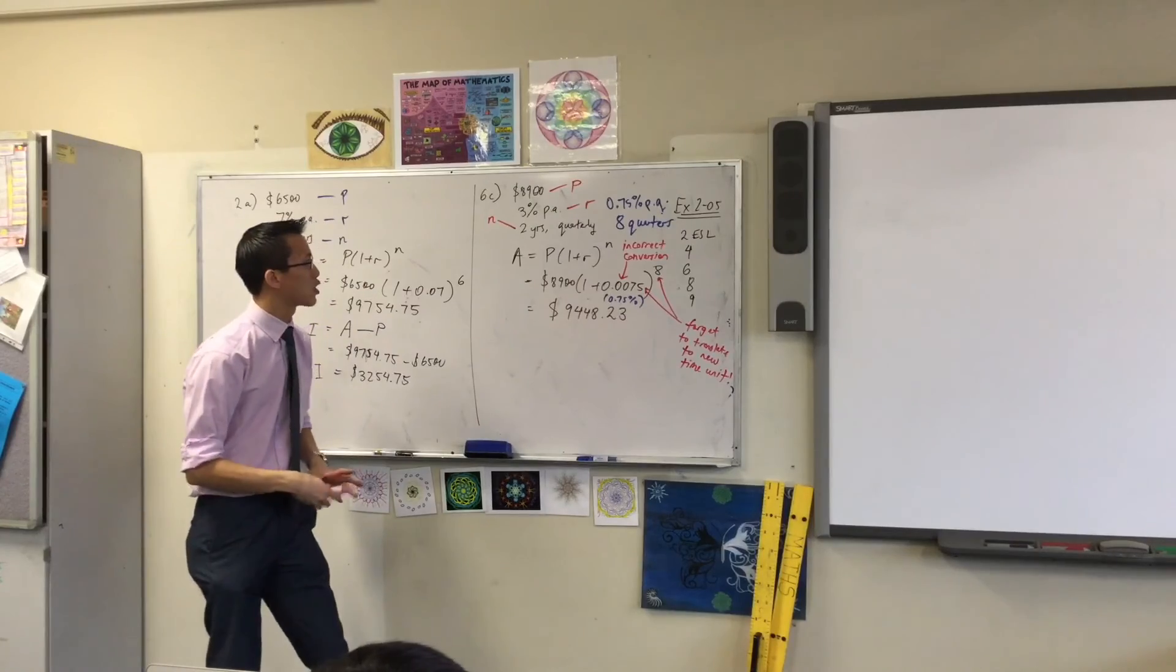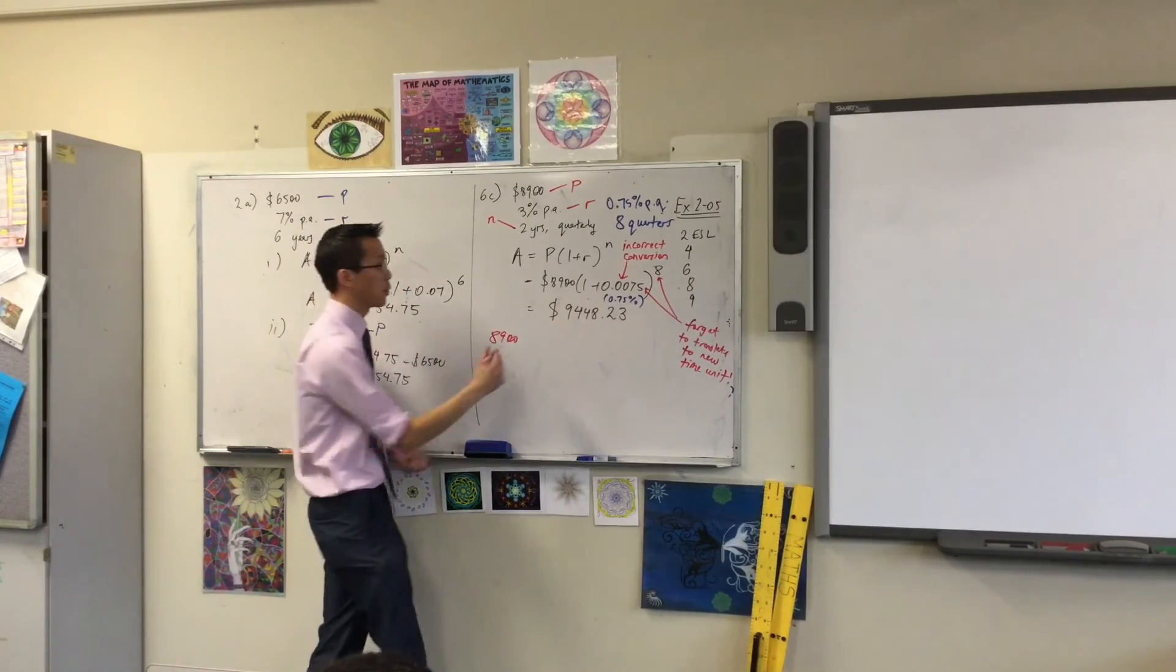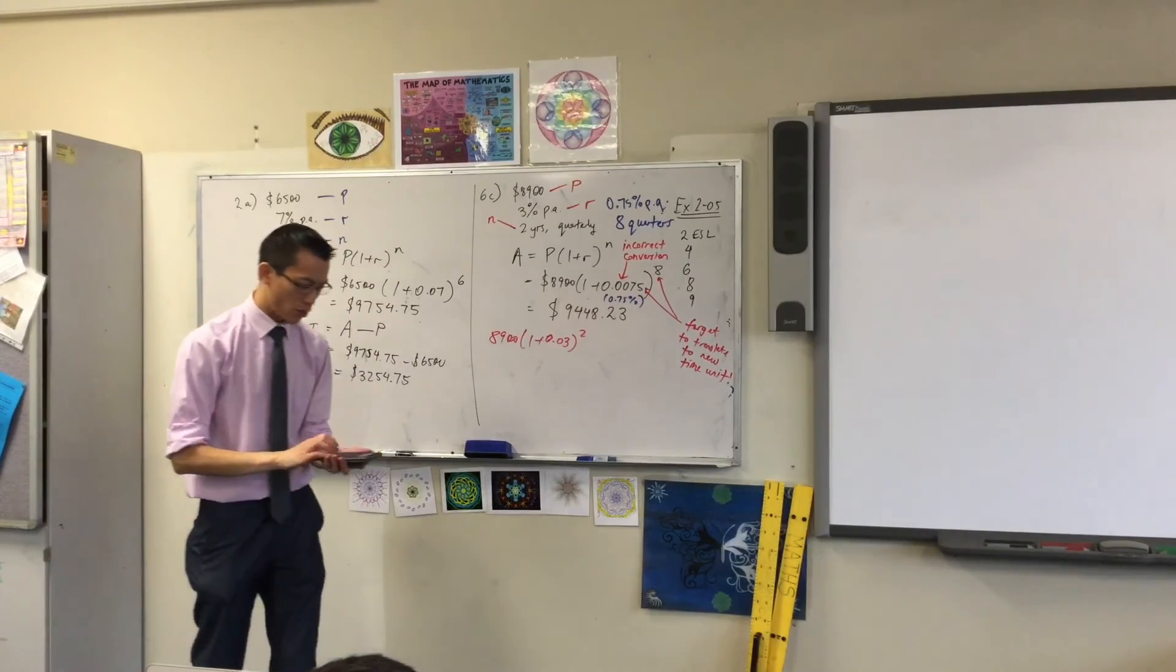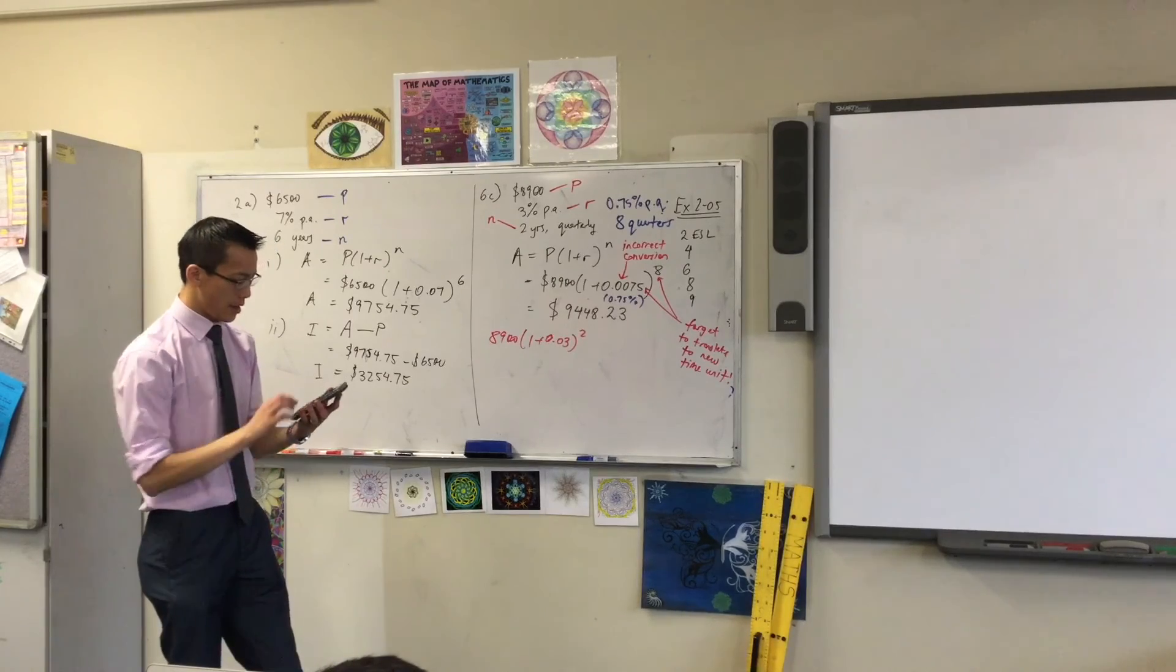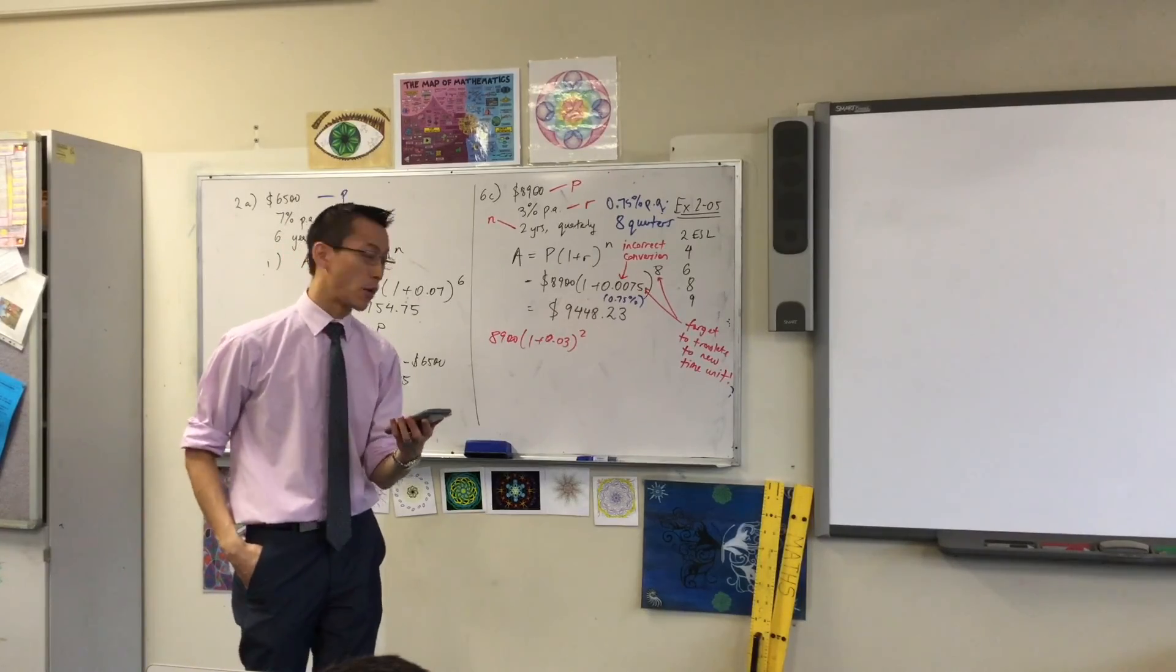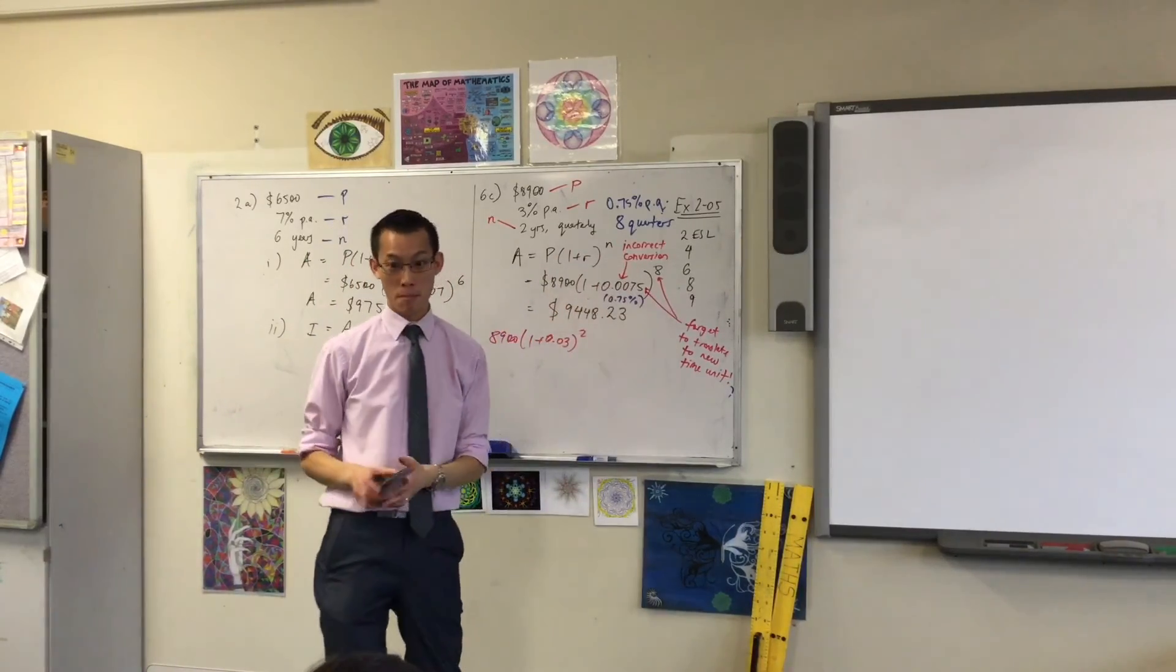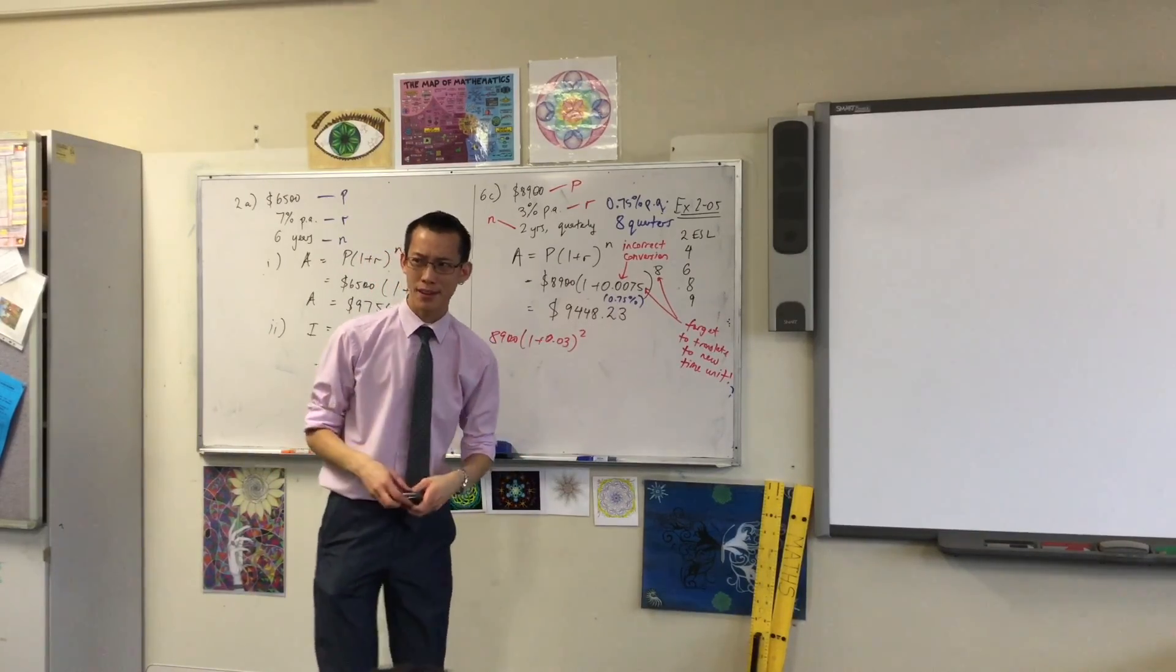They leave it in years. They'll just write down this instead. They'll write 8900. The principal is the principal. And then they'll write this. 0.03 squared. Now, I'll just quickly compute that for you. I can tell you right now, it's going to be less than our answer. It's only $9,442. So, you're missing $6 off the end. Compounding more frequently, it earns you more money, which is why banks these days, pretty much they're all compounding every day.